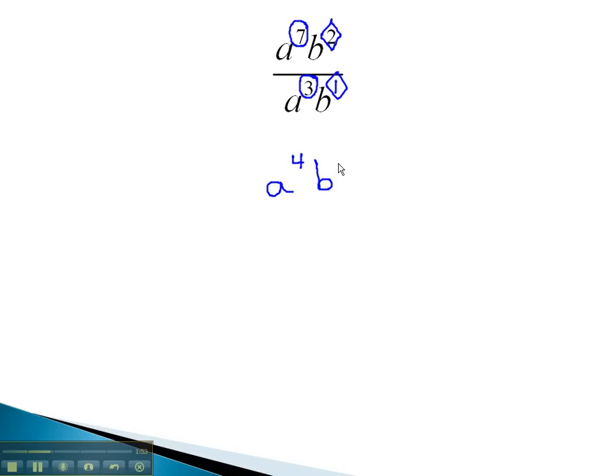This first power is not really necessary, because we always assume there is a 1 if nothing is written. Our simplified solution is a to the 4th, b.